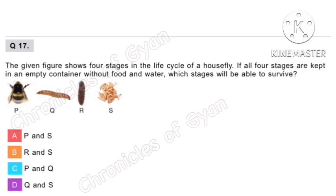Question 17. The given figure shows 4 stages in the life cycle of a housefly. If all 4 stages are kept in an empty container without food and water, which stages will be able to survive? The stages of eggs and pupa can survive. So option B, R and S, is the correct answer.